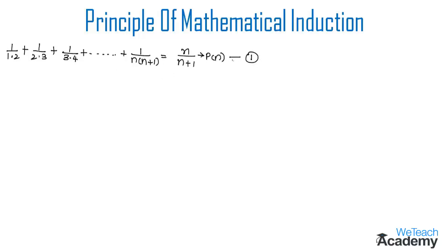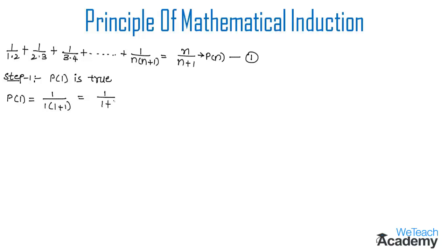Step 1: We have to prove P(n) is true. Substituting n=1 in the term 1/(n(n+1)), we get 1/(1·(1+1)) = 1/(1+1), which gives 1/2 = 1/2. Since LHS equals RHS, we can say that P(1) is true.